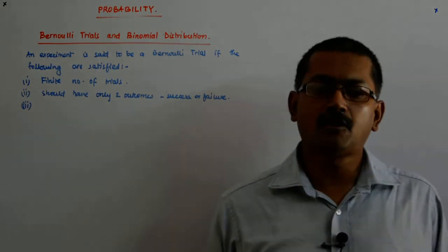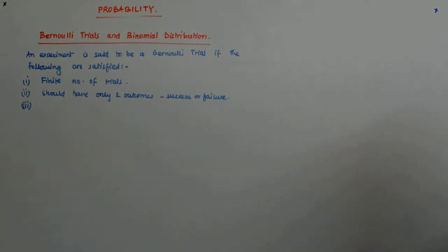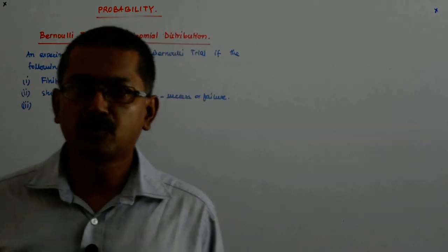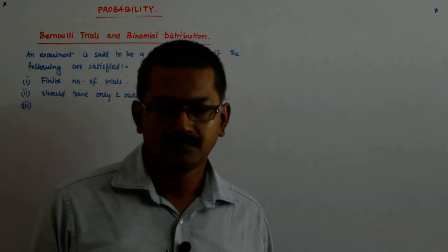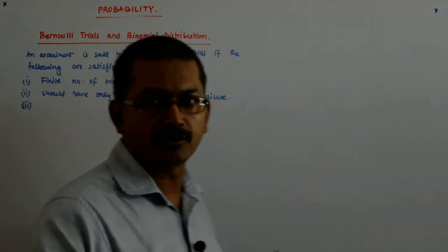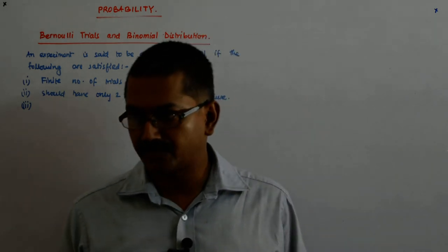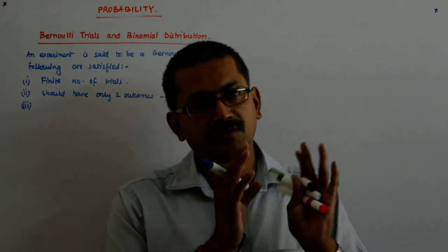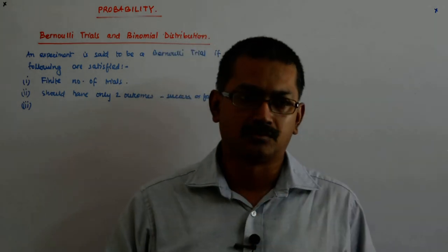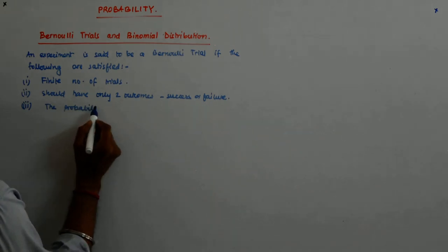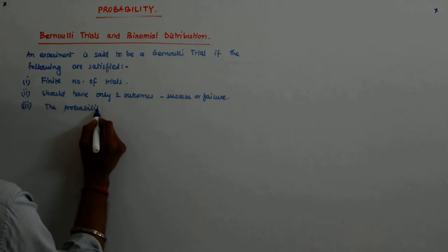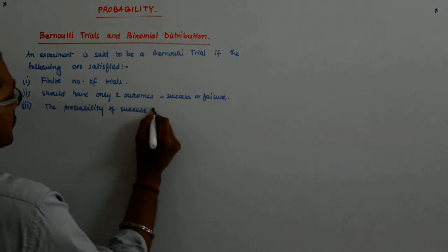Third, the probability of success and failure should always remain the same — not necessarily 1/2, but whatever it is, it should remain the same. For example, if you are throwing a dice and getting an even number is a success, then the probability of getting an even number is always half and it should remain so. The probability of success should be the same in each trial.